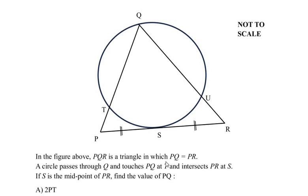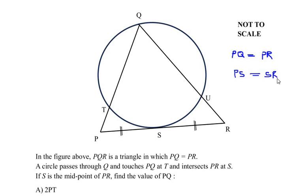Let us start with the given information. First, PQ is equal to PR. The next thing given is that S is the midpoint of PR, so this point divides the entire side PR into two equal parts — that is PS and SR. So we can write PS is equal to SR, and therefore PR equals two times PS.